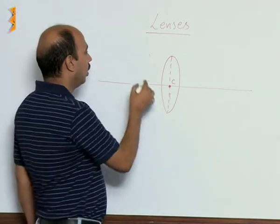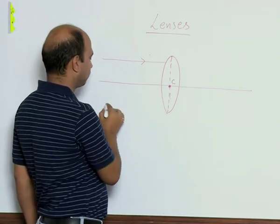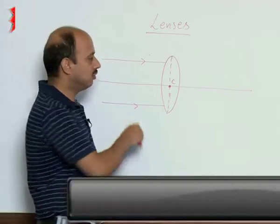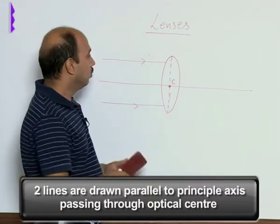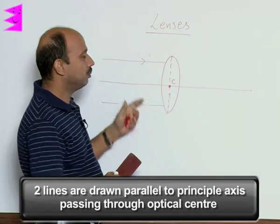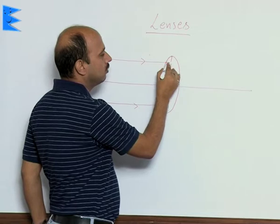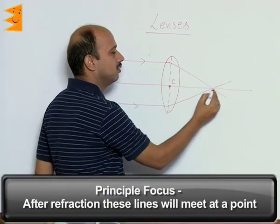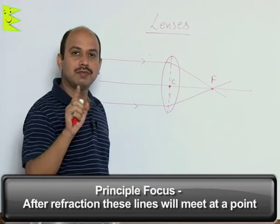If you have taken incident rays like this parallel to principal axis - this is the principal axis passing through optical center - these two lines are parallel to principal axis. After refraction these two lines will meet at a point. This point is known as principal focus.